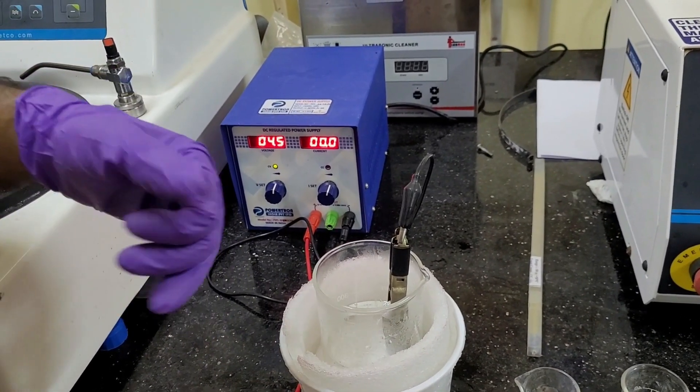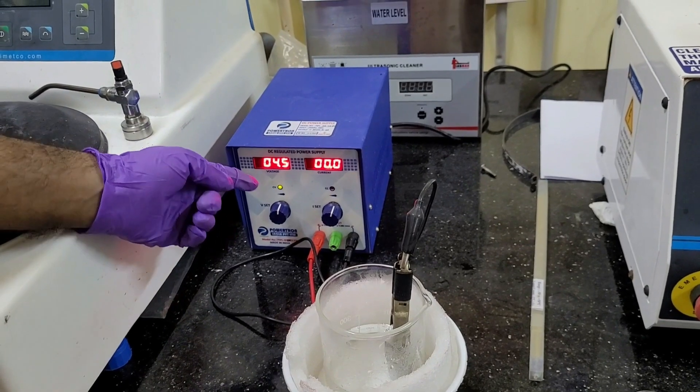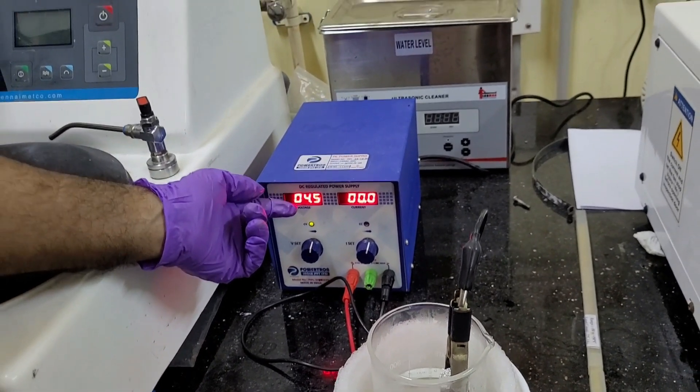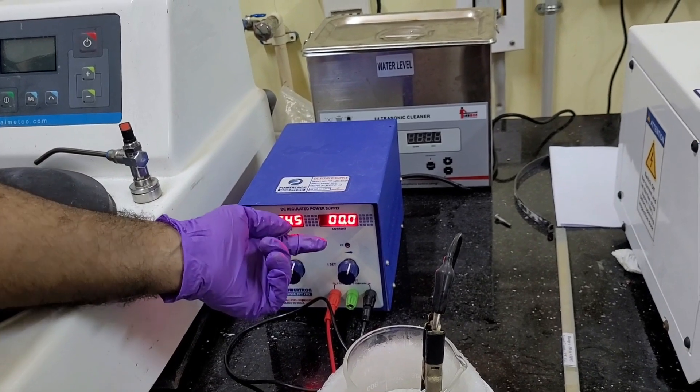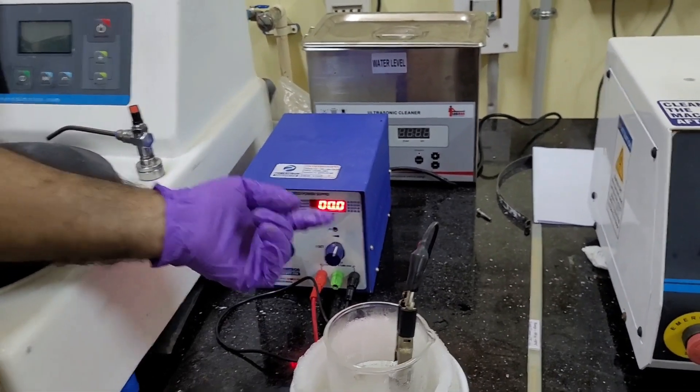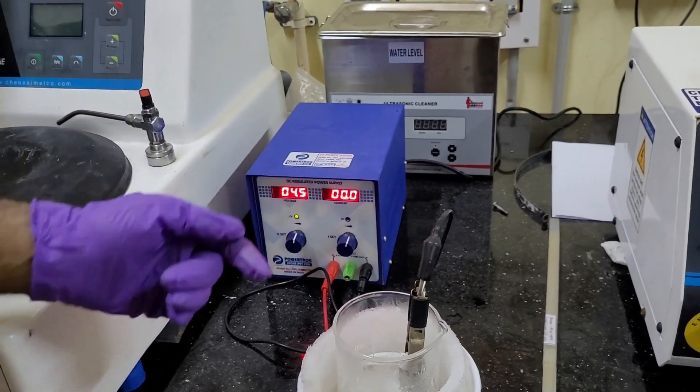So, we already have optimized our case parameters. So, that is, you can see the 4.5 volt voltage we are using. And accordingly, the current will come like 0.3 to 0.5 ampere. And after that...